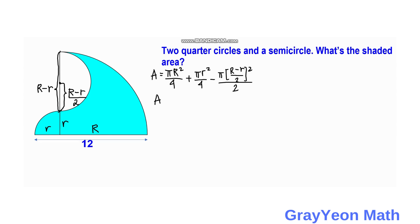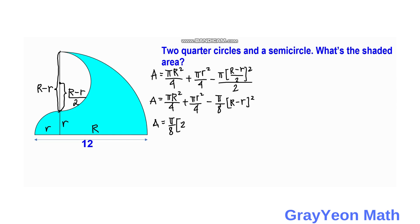We copy the first two terms, then simplify the third term. Squaring the numerator gives (R minus r) squared, and the denominator becomes 4 times 2, which is 8. We then factor out pi over 8, leaving inside: 2R squared plus 2r squared minus (R minus r) squared.